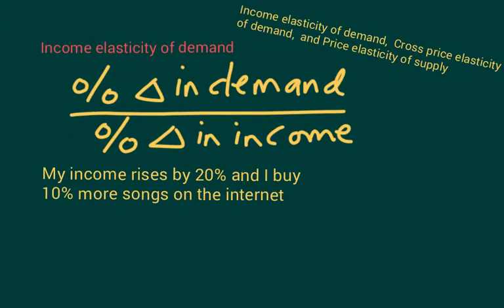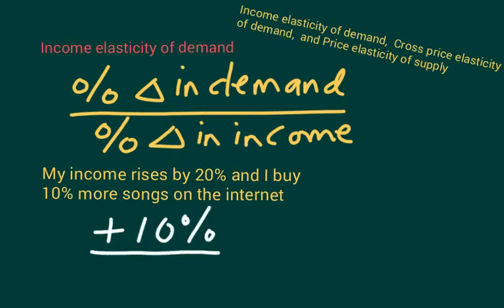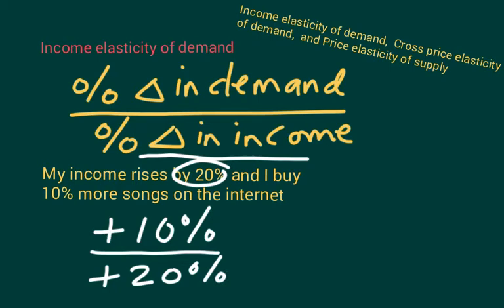So let's use a numerical example. Let's say my income goes up by 20%, and as a result I find that I buy or download 10% more songs on the internet. The percentage change in demand — the number of songs I buy — is increasing by 10%, so it's plus 10%. Divided by the percentage change in income, that's plus 20%. So plus 10% divided by plus 20%, which is one over two, equals 0.5. My income elasticity of demand here is 0.5.